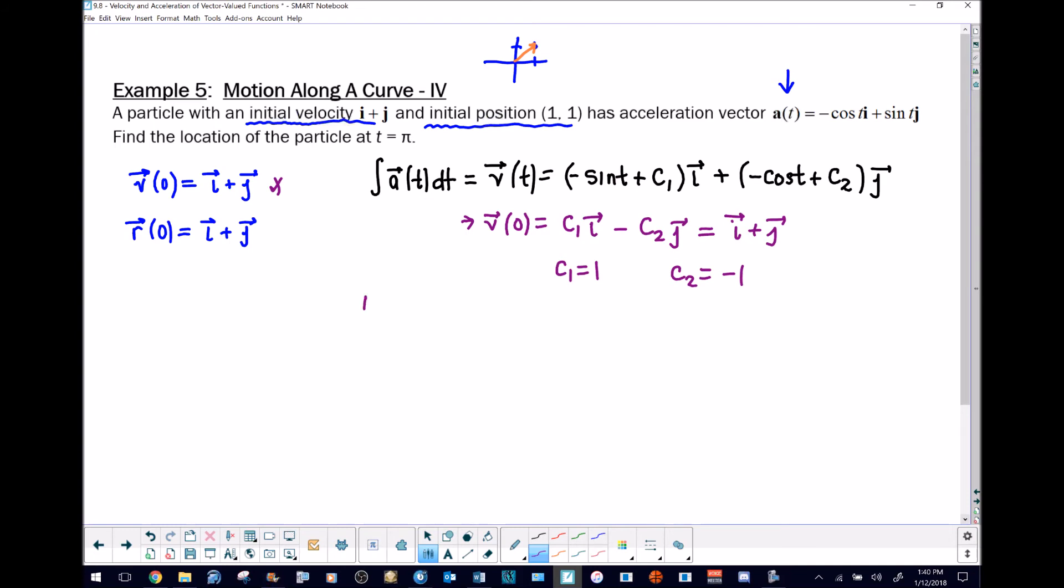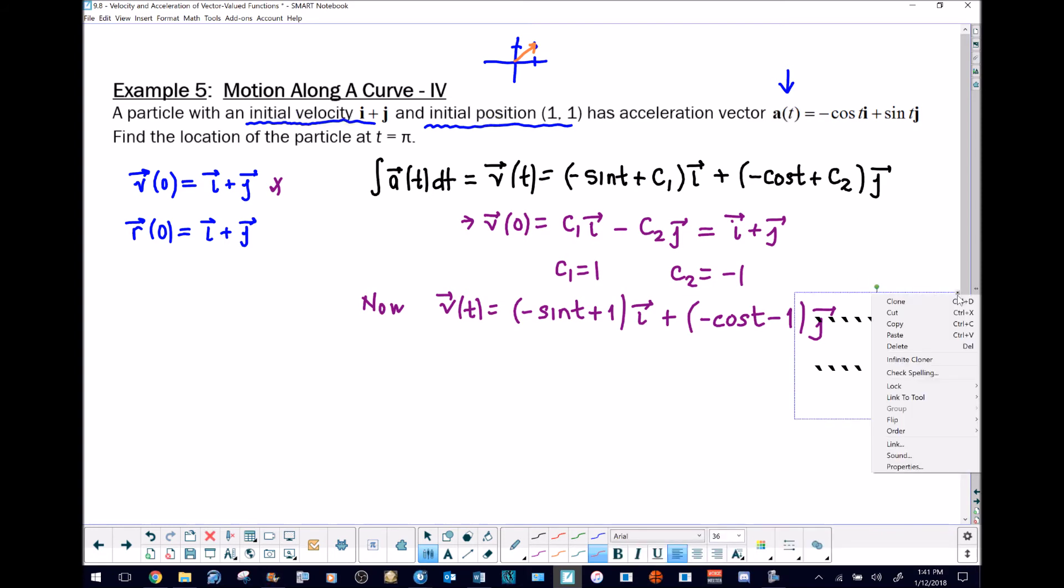What that means is our velocity vector is much more specific now. It would be negative sine of t plus one i, plus negative cosine of t minus one times j. From this point forward, we are essentially repeating this process. We're going to integrate using a little more room over here.